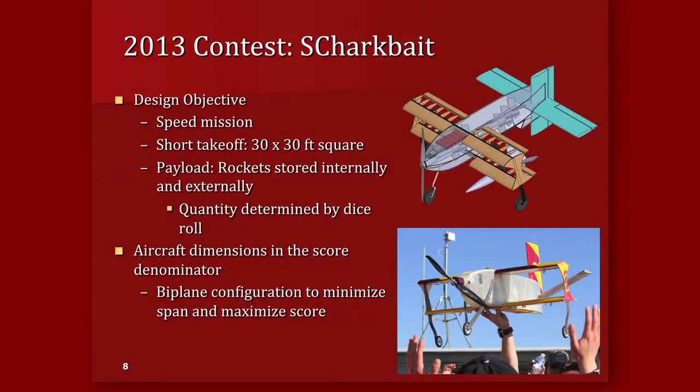Our 2013 plane was Sharkbait. That year, we had to do a speed mission, and for all missions we had to take off out of a 30 by 30 foot square. The payloads were determined by the roll of a dice at the flight line, so we had to accommodate payloads both internally and externally, as well as being imbalanced. We went with a biplane configuration because the aircraft dimensions were in the denominator of the scoring equation — to maximize our score, we reduced the span by going with a biplane.